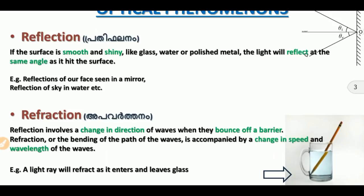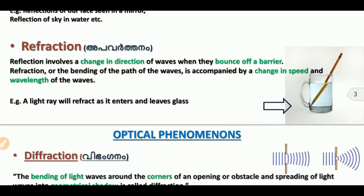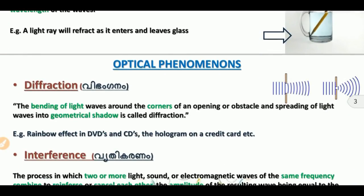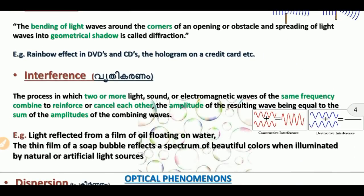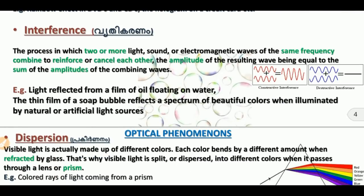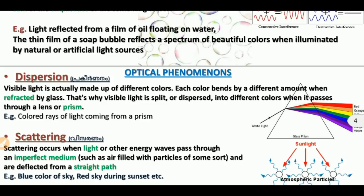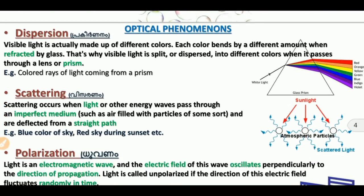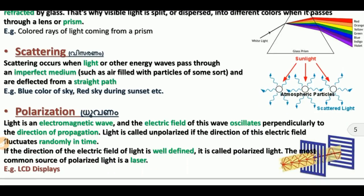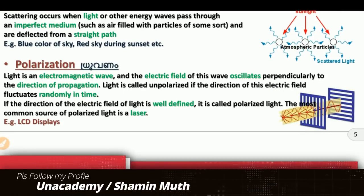Quick review: Reflection occurs off smooth surfaces. Diffraction is the bending of light around the corners of an obstacle. Interference is the adding or subtracting of light waves of the same frequency. Scattering occurs when light disperses through a medium. Polarization is when the electric field is well-defined in a particular direction.